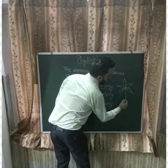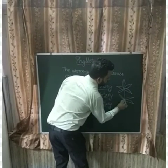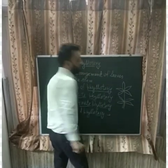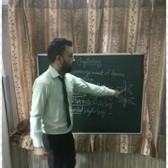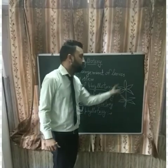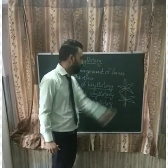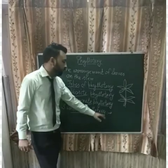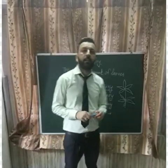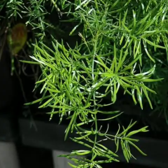At least more than two leaves arise from a single node. So this is Whorled Phyllotaxy. Examples of Whorled Phyllotaxy are Nerium, Asparagus, etc.